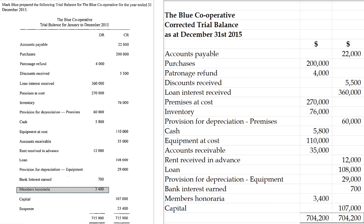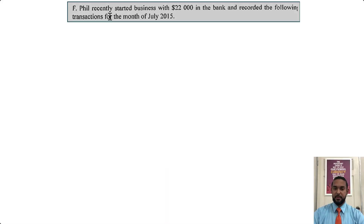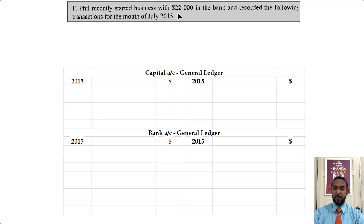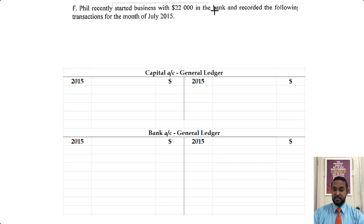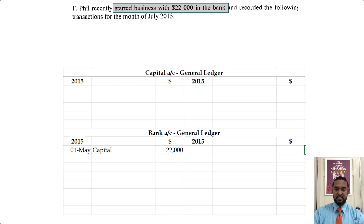Let me rearrange my screen because we're in for some double entry work now. F. Phil recently started business with $22,000 in the bank and recorded the following transactions for the month of July 2015. They gave us a bunch of T-accounts to populate. So the first thing is he started business with $22,000 in the bank — we have to debit bank because bank is an asset and it's increasing.